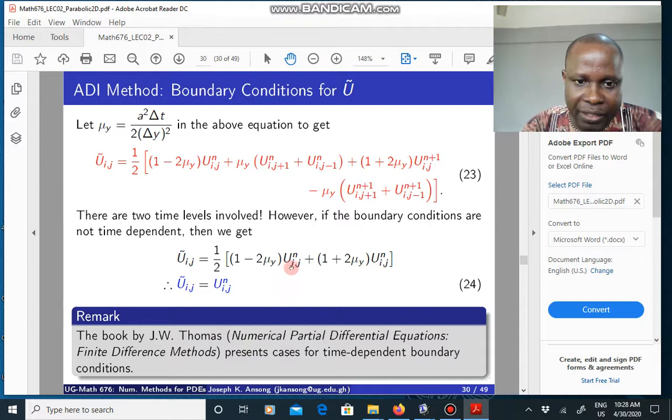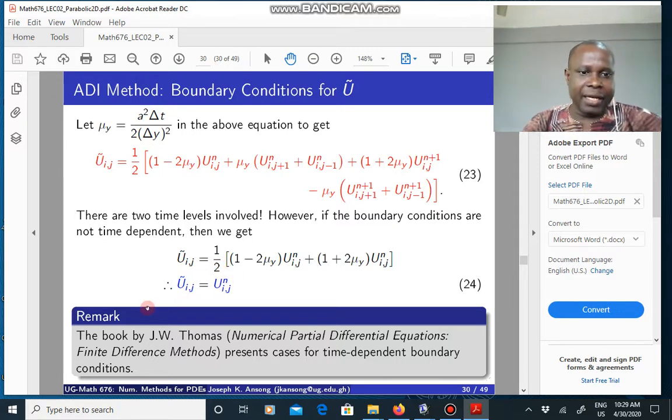And then you are just left with the sum of U_ij^n, U_ij^n, twice of that divided by 2, you get this. And so, in the final analysis, you have U tilde_ij is actually equal to U_ij^n, which is what we know from initial condition or from a previous computation. So, from this, we can get boundary conditions for U tilde.